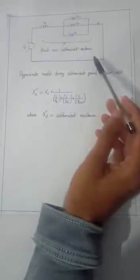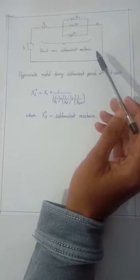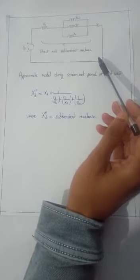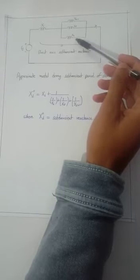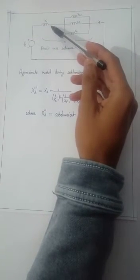This figure shows the approximate model during Subtransient period of short circuit. Here three reactances XDW, XF and XA are in parallel and XL is in series.